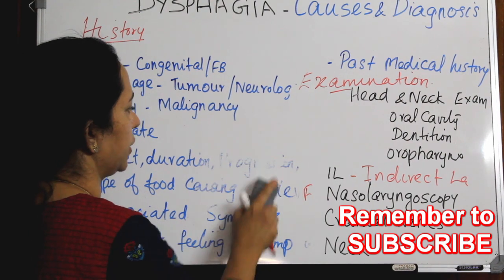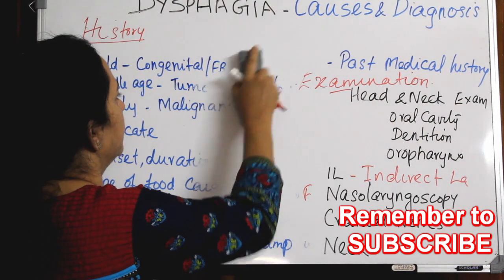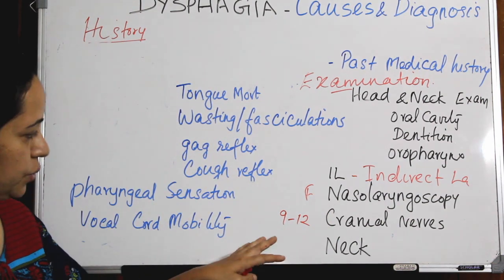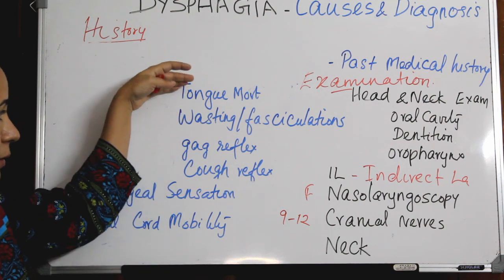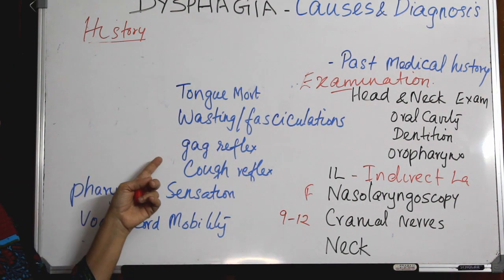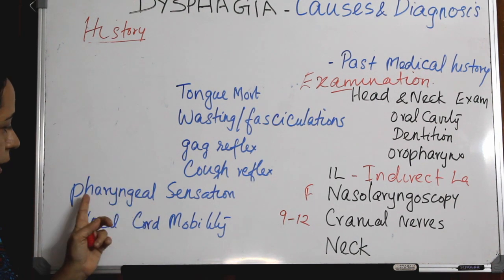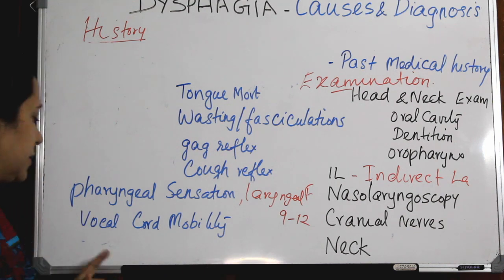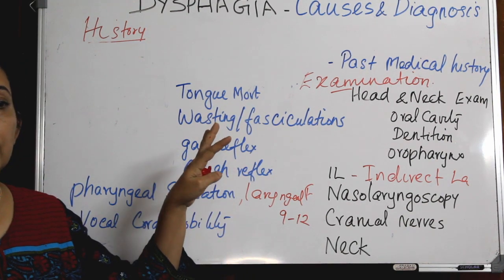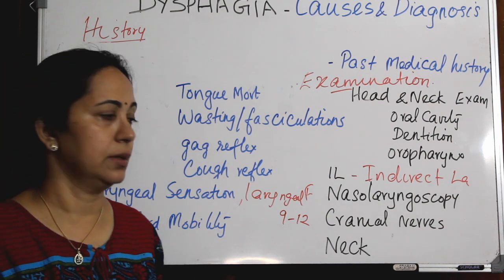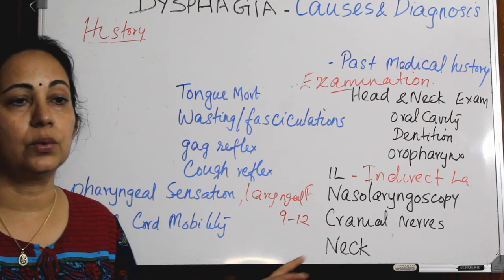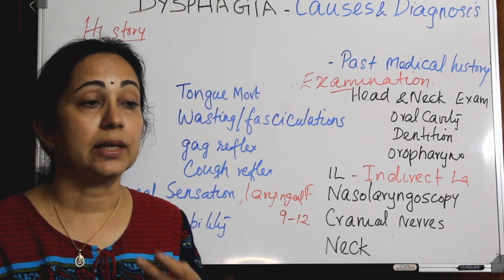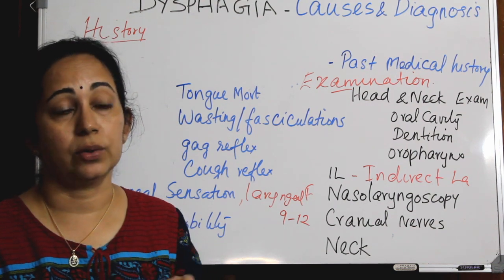In the cranial nerve examination, especially look for movement of the tongue. Cranial nerves 9, 10, 11, and 12 have to be examined. Don't forget to look at the movement of the tongue — is there any wasting or fasciculations? Look for the gag reflex, calf reflex, and pharyngeal and laryngeal sensation. Vocal cord mobility is also very important. In the neck, look for any cervical lymph node enlargement, status of the thyroid, laryngeal crepitus, and integrity of the laryngeal cartilages.